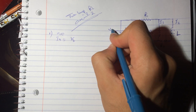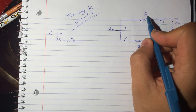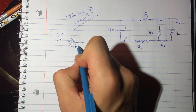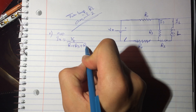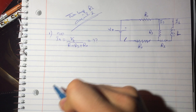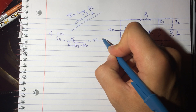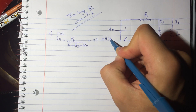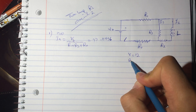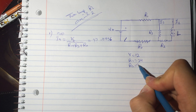So I4 equals the battery voltage VB divided by the sum of resistors R1 plus R3 plus R4. My values were: voltage 12V, R1=24Ω, and I got an answer of 0.0456 amperes.